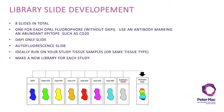Autofluorescence removal enables detection of low abundance epitopes by increasing the signal to background ratio. When creating your library slides we also recommend using tissue from your study; however, a reliable positive control tissue such as tonsil may also be used. Given that autofluorescence varies greatly between different tissue types, in order to get really robust removal you must use the same tissue type you're studying, at least for your autofluorescence slide. We recommend building a new library for each study, and note that library slides can be reused for several months when stored under optimal conditions.